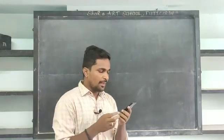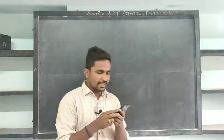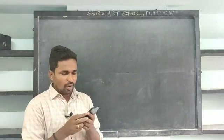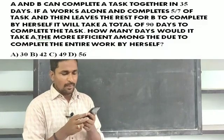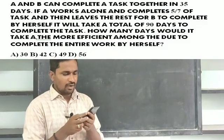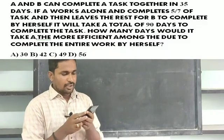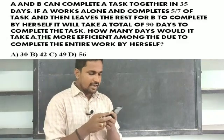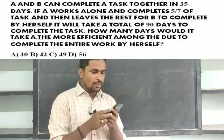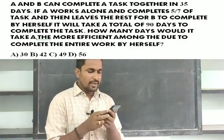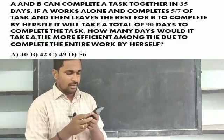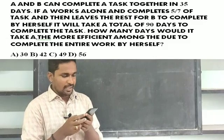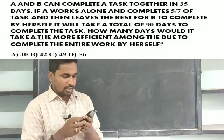A and B can complete tasks together in 35 days. If A works alone and completes 5 by 7 of the task, and then leaves the rest to B to complete, it will take a total of 90 days to complete the task.